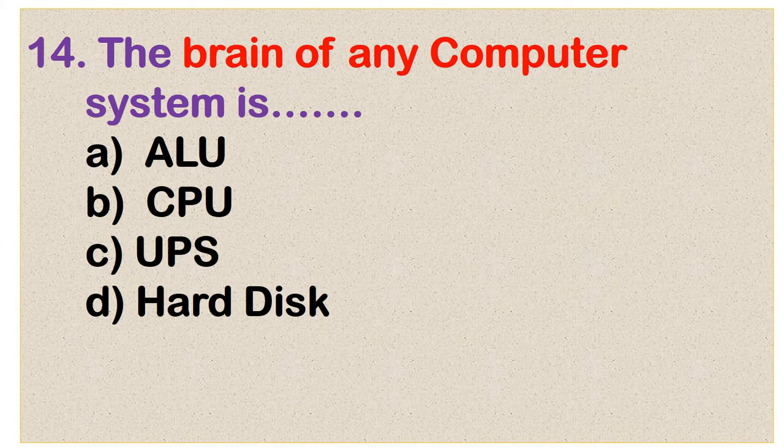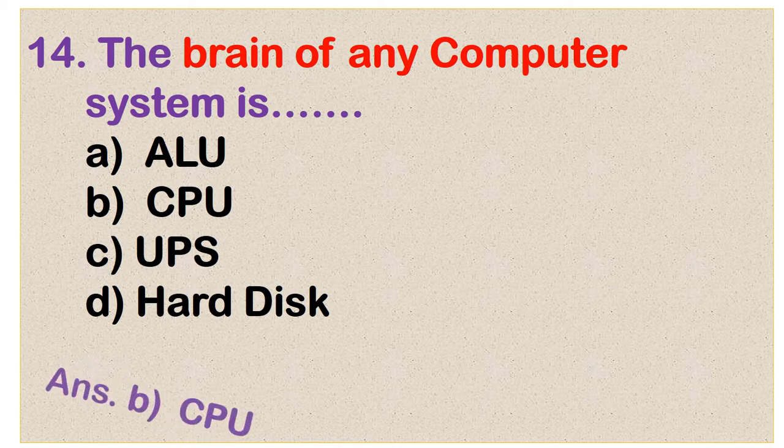Question number 14: The brain of any computer system is: arithmetic logic unit (ALU), CPU (central processing unit), or uninterrupted power supply and hard disk. Option B is the correct answer: CPU.